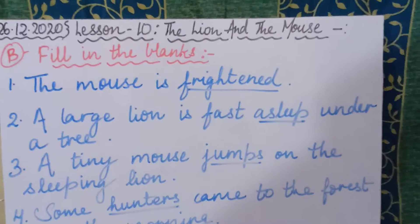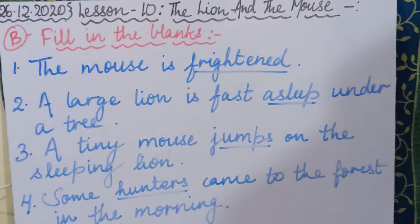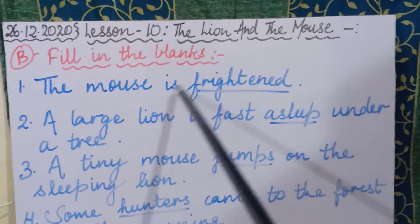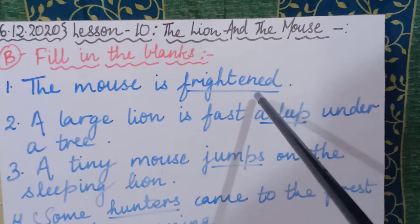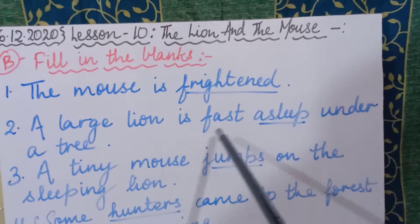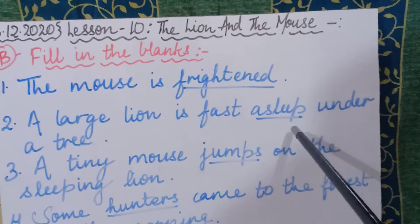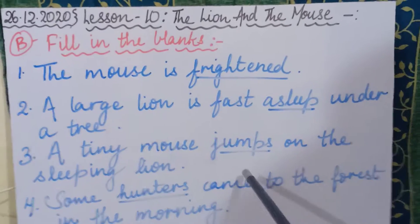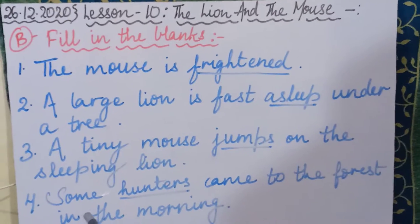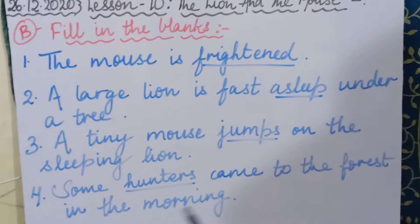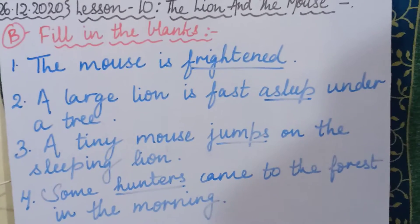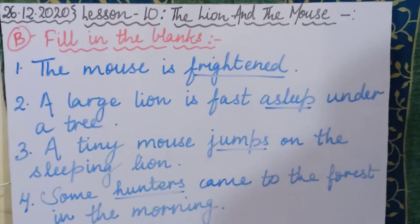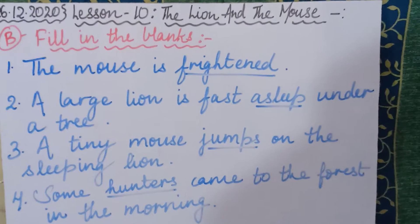I hope you have understood it very clearly. Let me repeat all four sentences with their answers and spellings — please concentrate carefully. First sentence: 'The mouse is ___' — frightened. F-R-I-G-H-T-E-N-E-D. Second sentence: 'A large lion is fast ___ under a tree' — asleep. A-S-L-E-E-P. Third sentence: 'A tiny mouse ___ on the sleeping lion' — jumps. J-U-M-P-S. Fourth sentence: 'Some ___ came to the forest in the morning' — hunters. H-U-N-T-E-R-S. I hope you all have understood all four fill-in-the-blanks — they are very easy. Please make sure that you complete them in your notebooks.